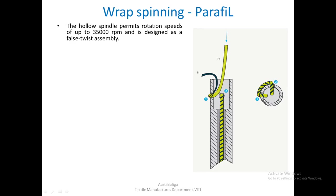From the top cross-section, the strand wraps around the top of the hollow spindle, and this gripping action acts like a false twister for the strand. The material is then made to re-enter the hollow spindle.